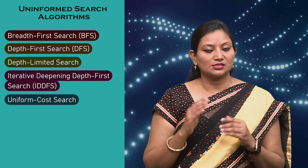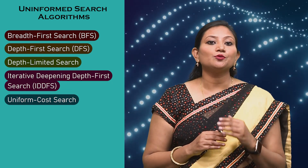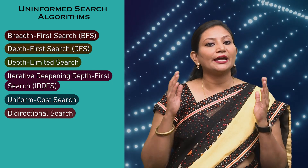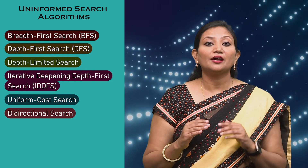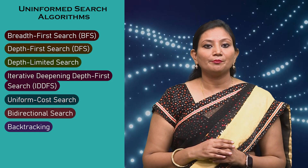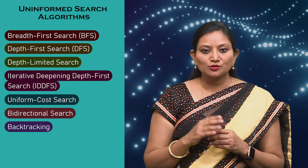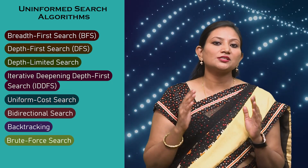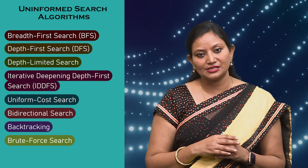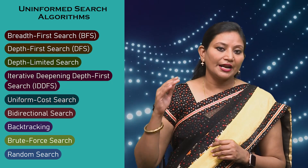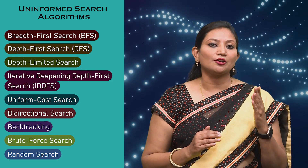Fifth, uniform cost search explores the search space by considering the cost of each path, enqueuing nodes in a priority queue based on accumulated path cost. Sixth, bidirectional search simultaneously explores the search space from both the initial and goal states, meeting in the middle, which reduces the search space and improves efficiency. Seventh, backtracking recursively explores all possible paths and backtracks when a dead end is reached; commonly used for constraint optimization problems. Eighth, brute force search exhaustively searches through all possible states or solutions, suitable for problems with a manageable number of states. Ninth, random search generates random sequences of actions to explore the search space and can be useful where other methods are not applicable or efficient.